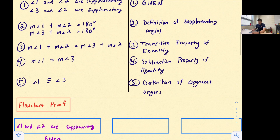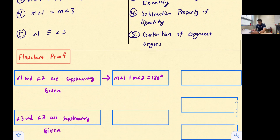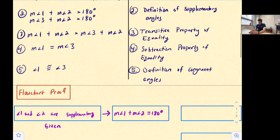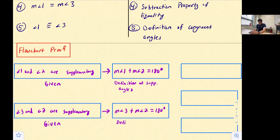Now, drawing arrows from our given statements to the next boxes: the top box gets 'the measure of angle one plus the measure of angle two equals 180 degrees,' because angle one and angle two are supplementary. The bottom box gets 'the measure of angle three plus the measure of angle two equals 180.' The reason written below both of these boxes is the definition of supplementary angles.